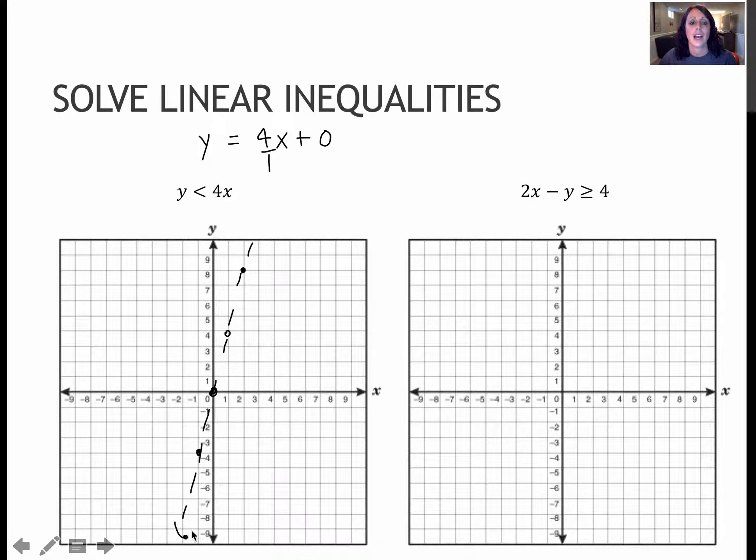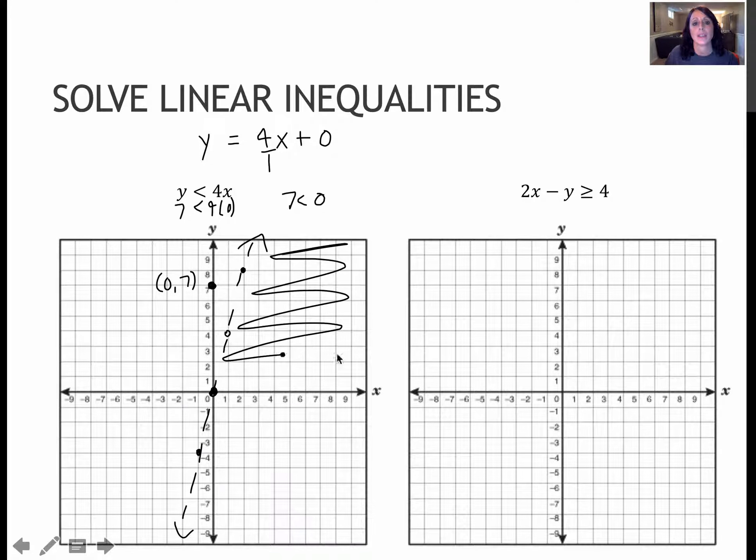And notice on this one, I can't use my favorite point of 0, 0 because my line goes through 0, 0. So I have to choose any other point. Most people prefer to use like 0, something. So I'm going to choose 0, 7. So 0 on the x, 7 on the y, which means I'm going to plug a 7 in here, I'm going to plug the 0 in here. And I get 7 is less than 0. True or false? Obviously, 7 is not less than 0. So don't shade towards that point. Shade the opposite side.